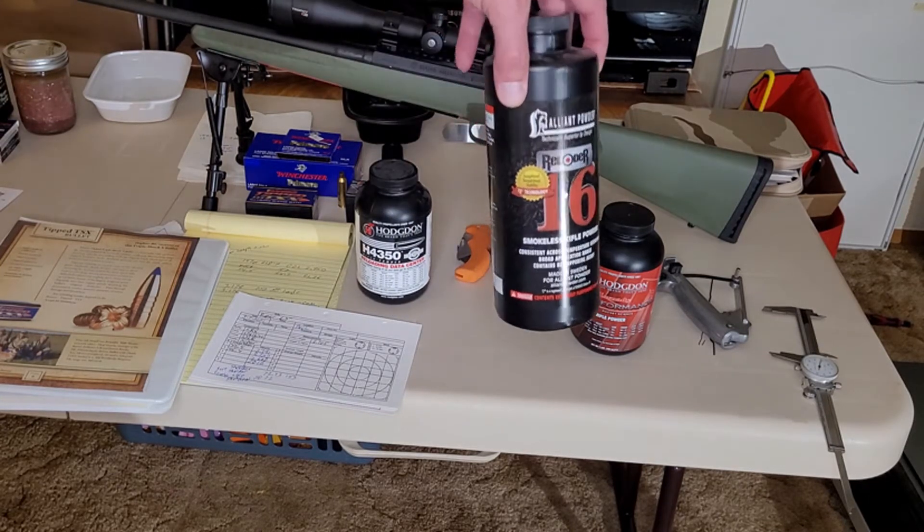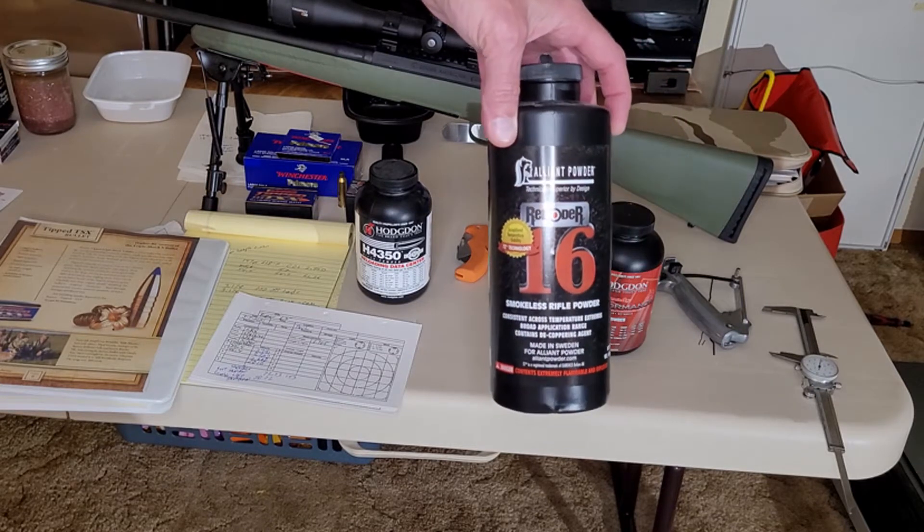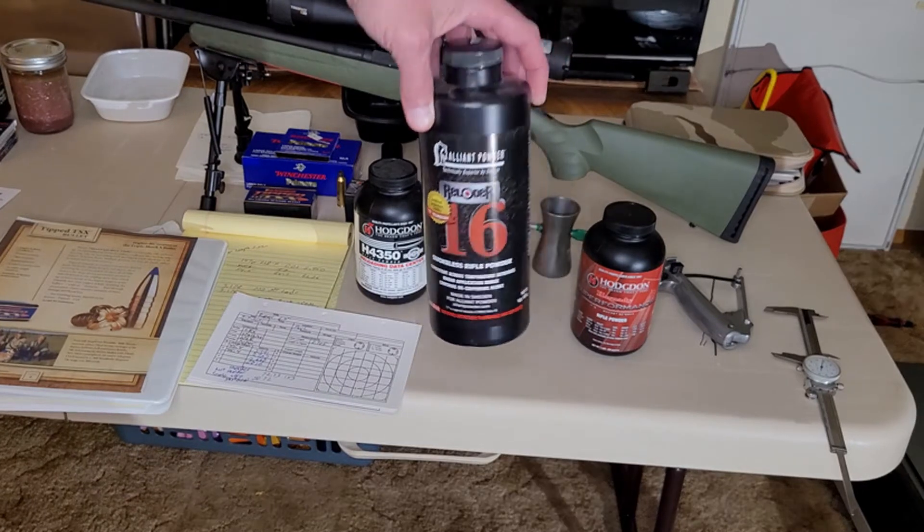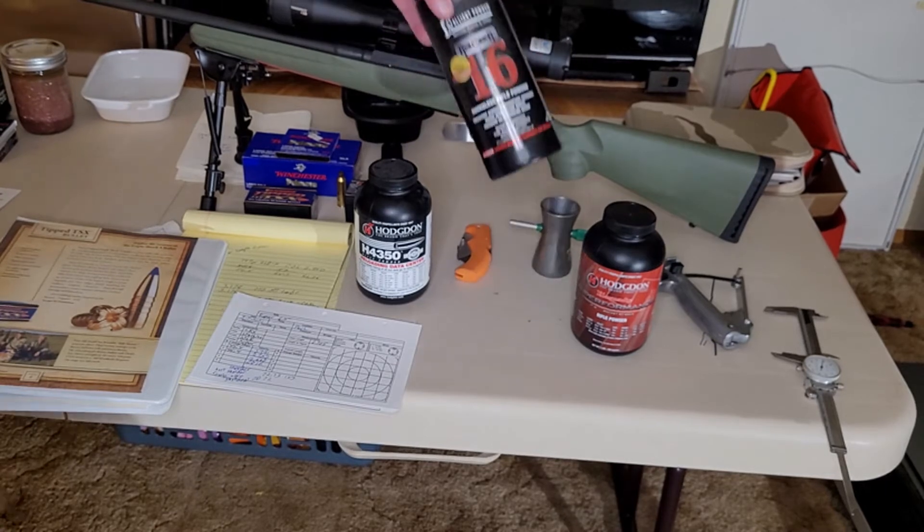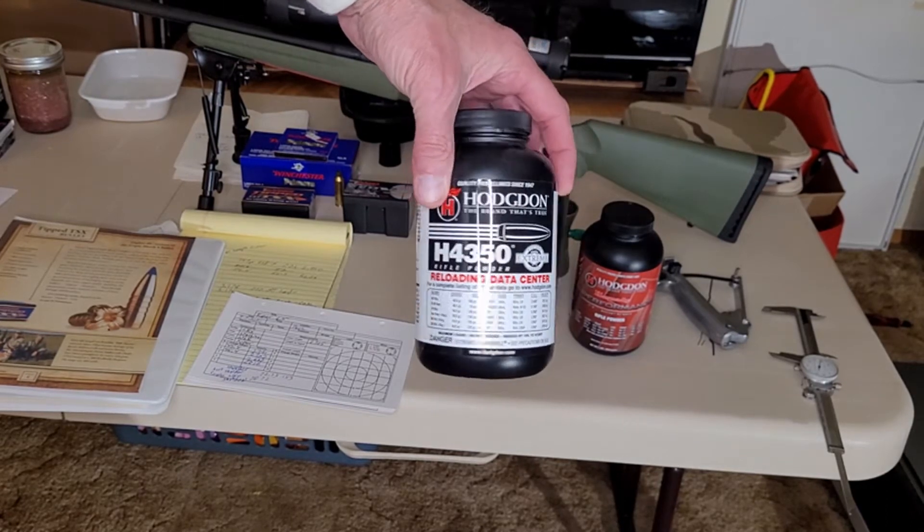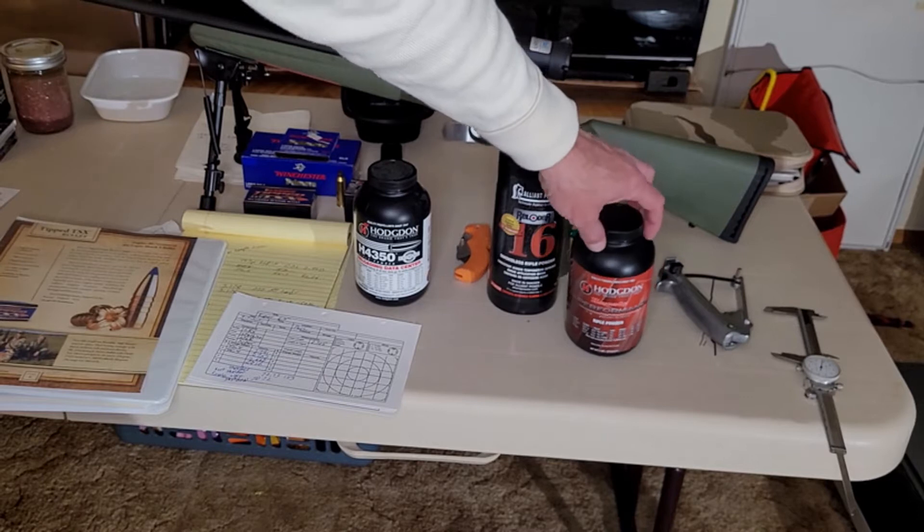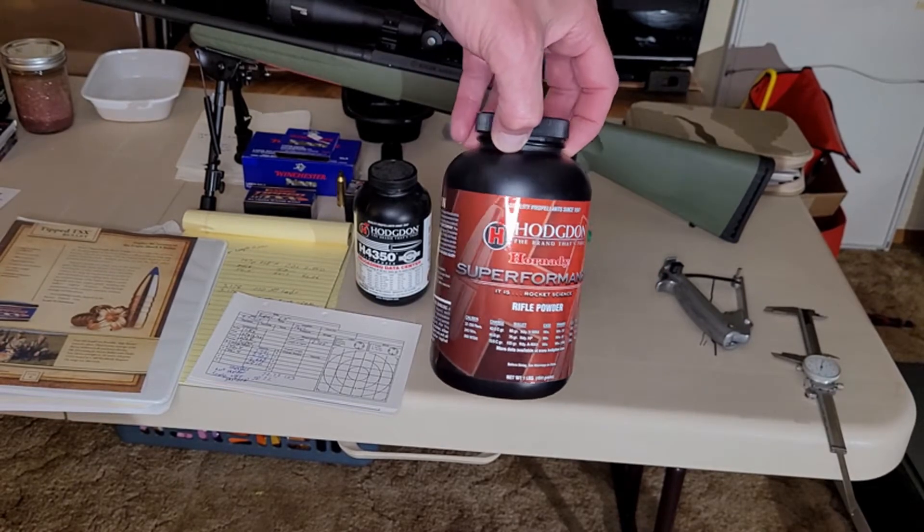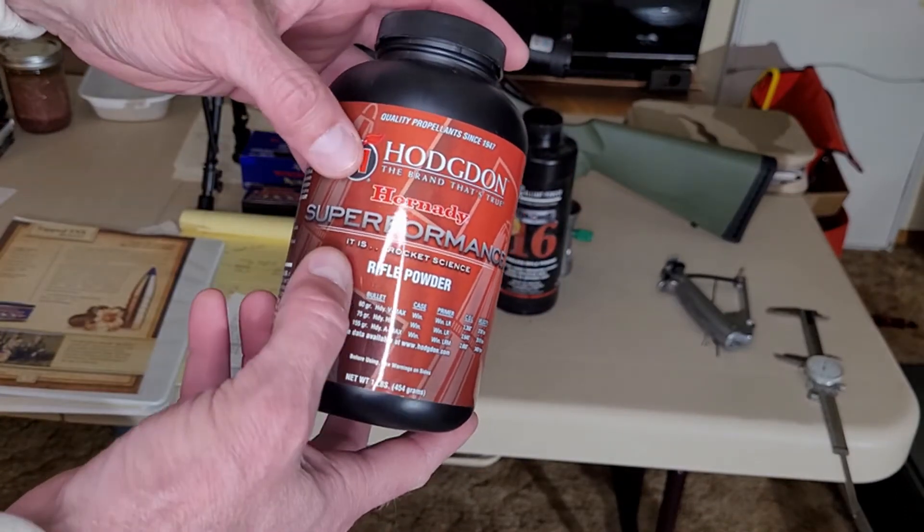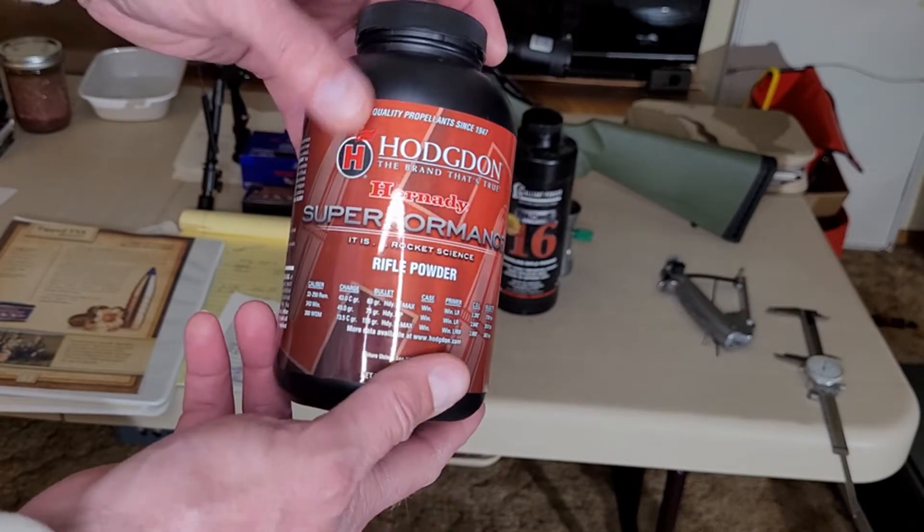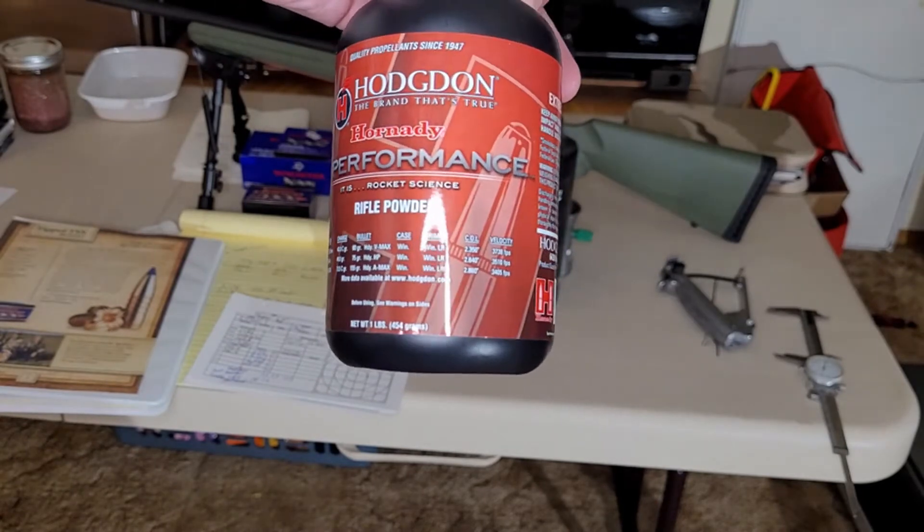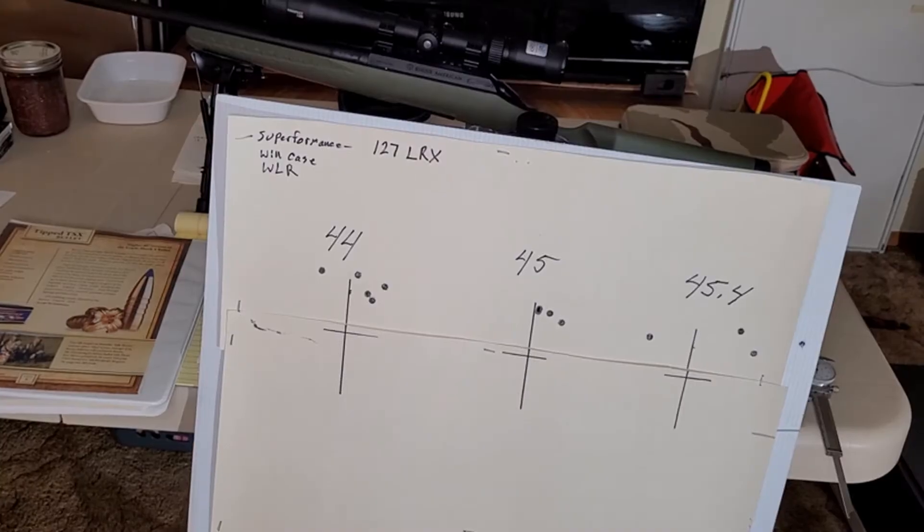I had found some Reloader 16, was not happy with it, hit pressure before published max and discontinued its use. The only powder I could find at Bass Pro Shop when I went out west hunting was this Hodgson Super Performance. It says it is rocket science and they brag that you will get 100 feet per second more with this powder than the other. That is today's results.